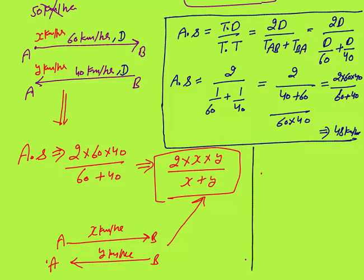Now, a very important insight: d got cancelled out in the derivation, meaning for any value of d — whether 1 km, 30, 40, or 60 — the answer will always be 48 km/h. So when the distance is the same in both directions, you can freely choose any convenient value of d.